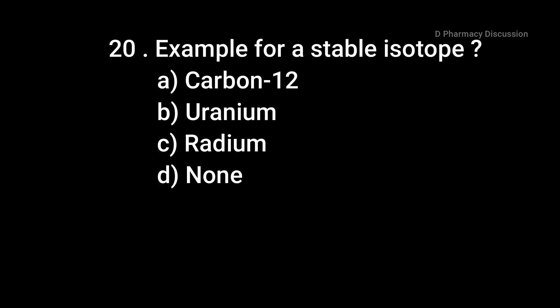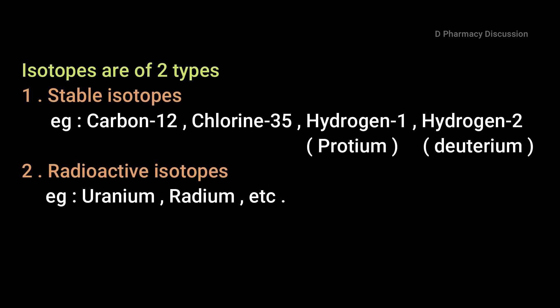Question 20: Example of a stable isotope — option A: carbon-12, B: uranium, C: radium, option D: none. Correct answer is option A, carbon-12. Isotopes are of two types: stable isotopes and radioactive isotopes. Examples of stable isotopes are carbon-12, chlorine-35, hydrogen-1 (protium), and hydrogen-2 (deuterium). Examples of radioactive isotopes are uranium and radium.